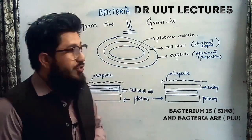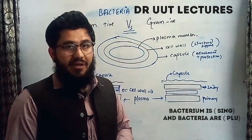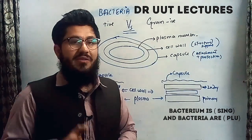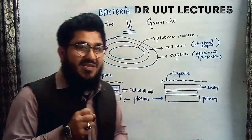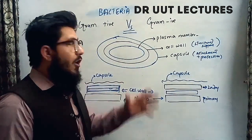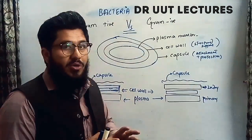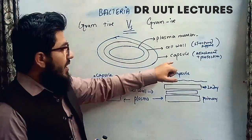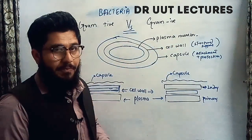In today's tutorial, we are going to discuss the gram positive and gram negative bacteria — specifically, we are going to differentiate between them. Let's start our discussion from the structure of the bacteria. Bacteria is actually composed of three very important layers: the capsule, the cell wall, and the plasma membrane.